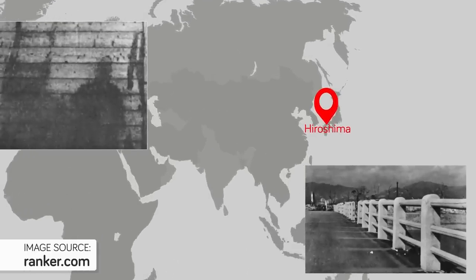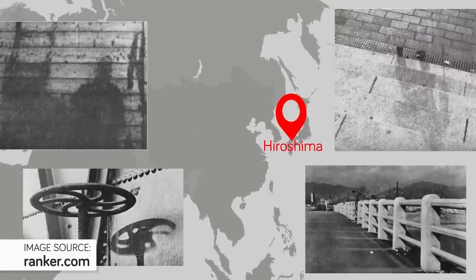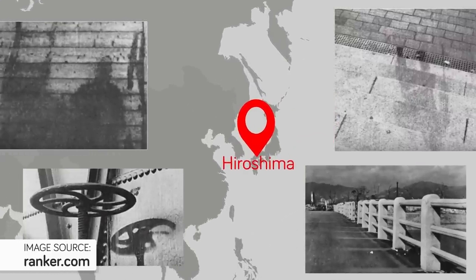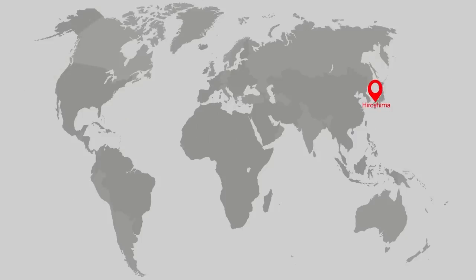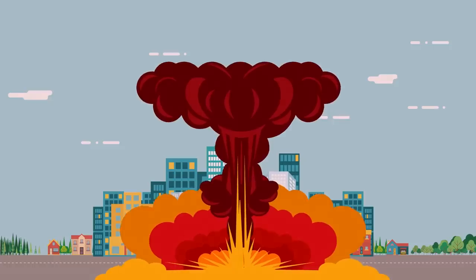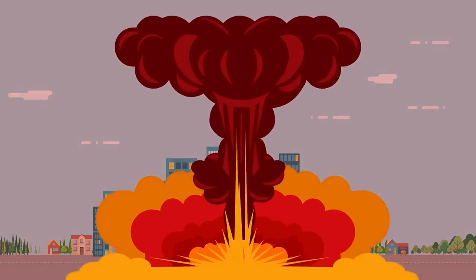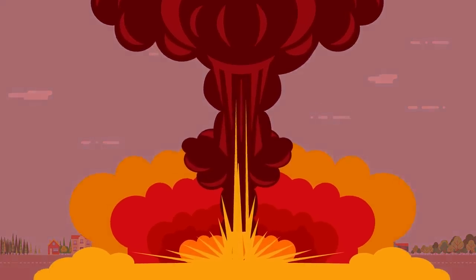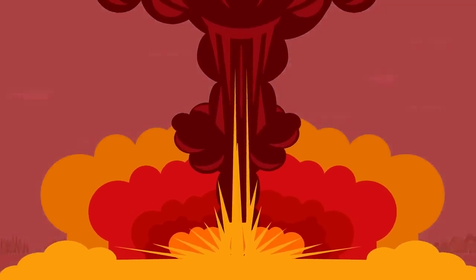35. Shadows from people near the epicenter of the blast at Hiroshima were permanently burned into the sides of buildings and the pavement. 34. The Hiroshima bombing created a firestorm two miles in diameter. At Nagasaki, a southwest wind pushed fires away from the city and didn't let them become so severe.